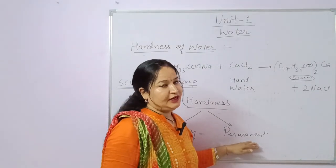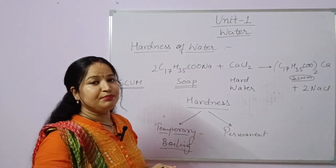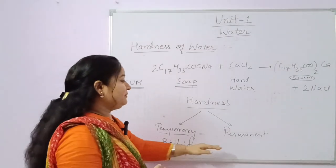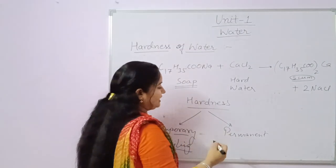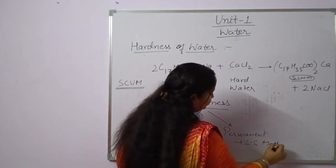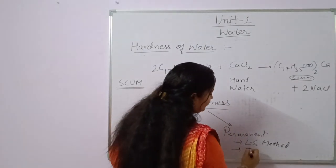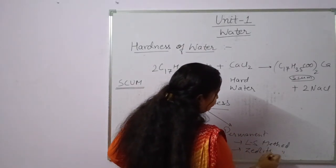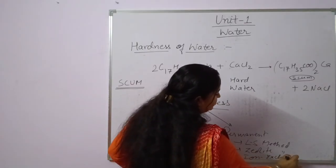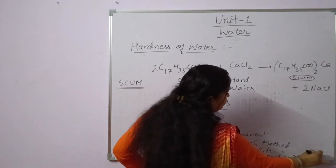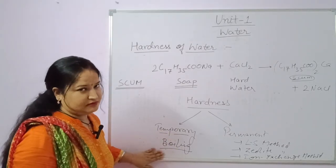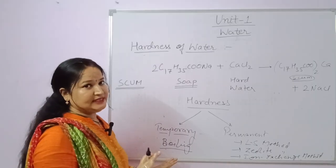In the case of permanent hardness, it cannot be removed by a simple process. We have to use certain methods. There are different methods like the lime-soda method, the zeolite method, and the third one is the ion exchange method. So temporary hardness is easily removed, while permanent hardness is not easily removed — that's why it is called permanent hardness.